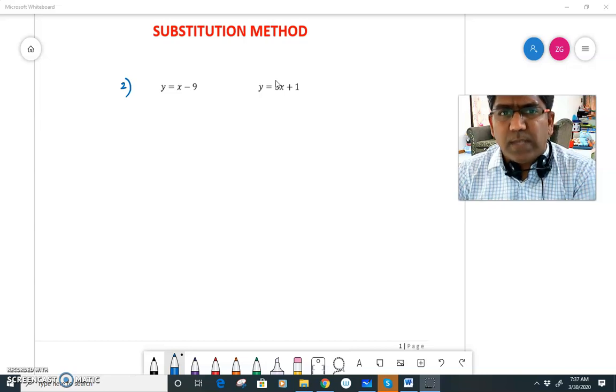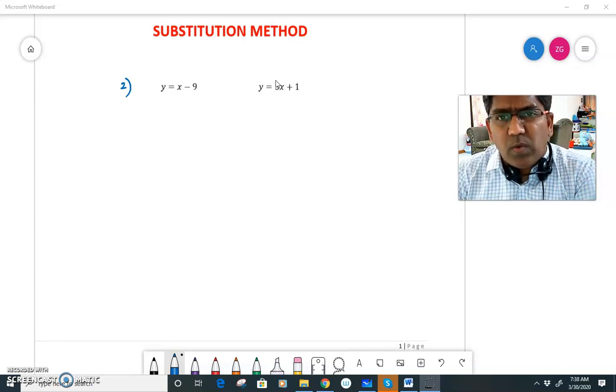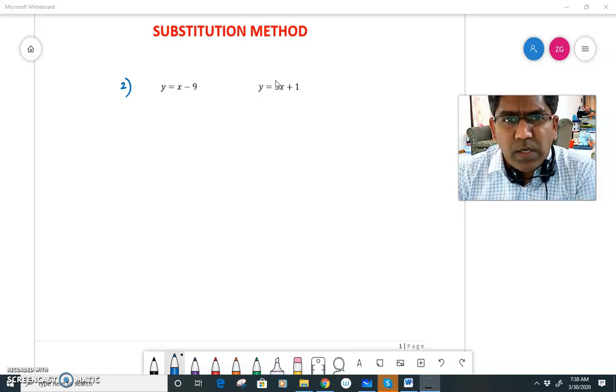But in this particular example, if you see equation one, y is isolated. Y is alone. And equation two also, again, I have y alone. So I don't have to isolate any variable. It's already done for me.